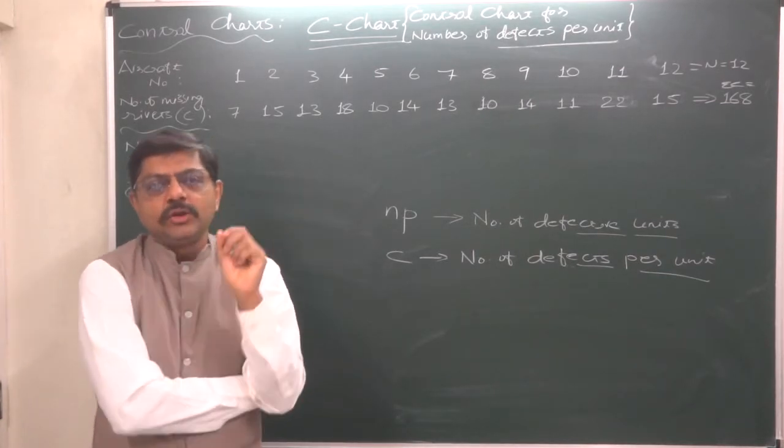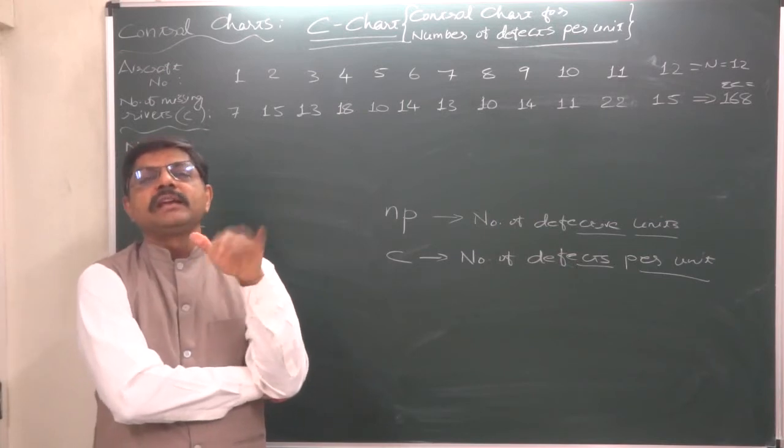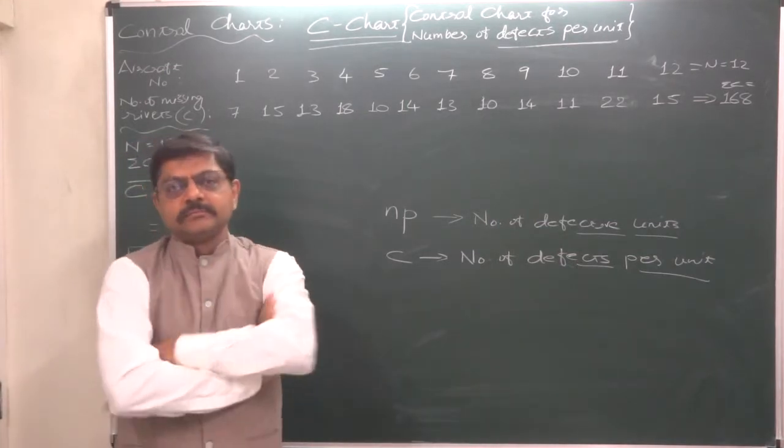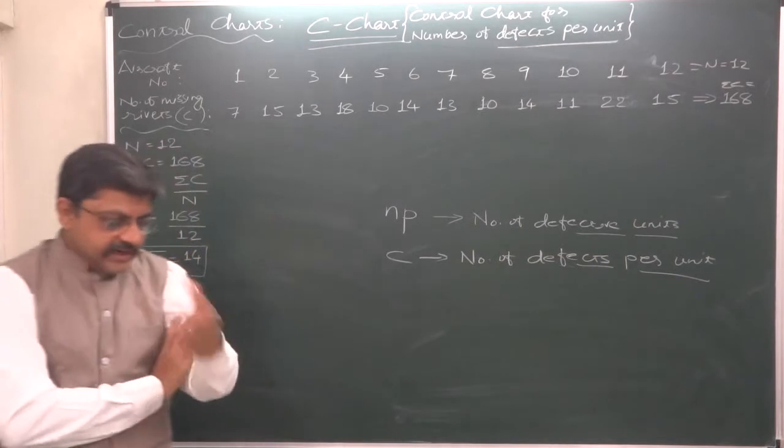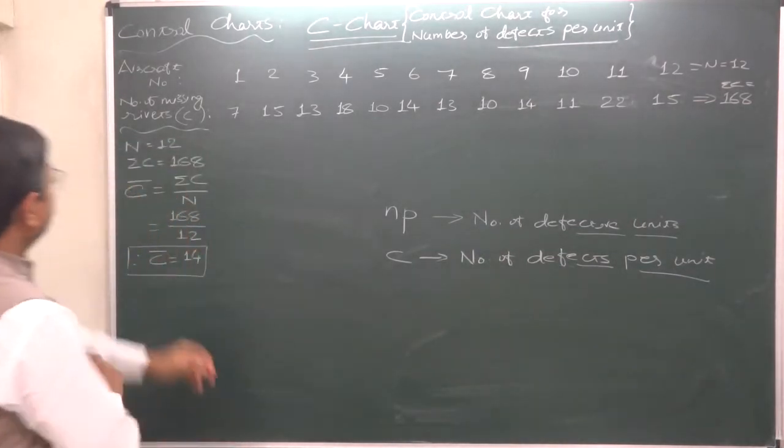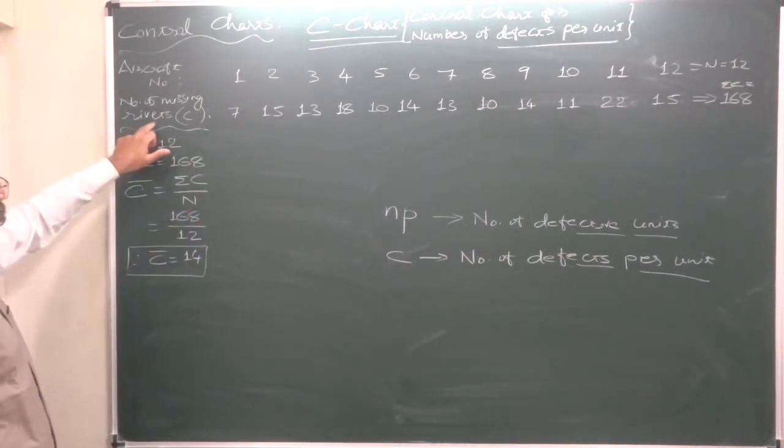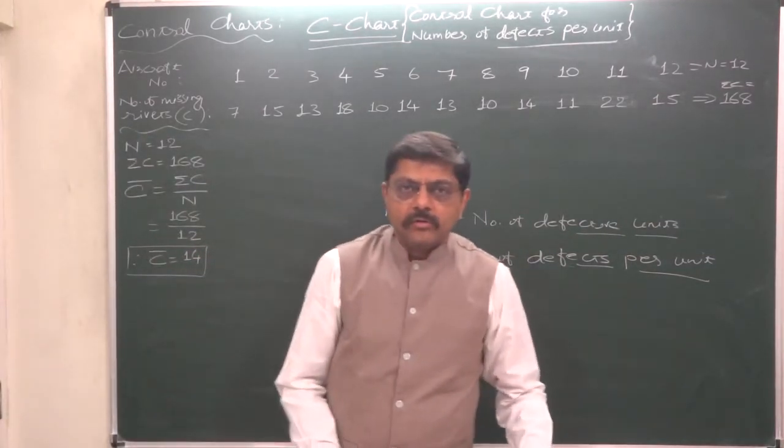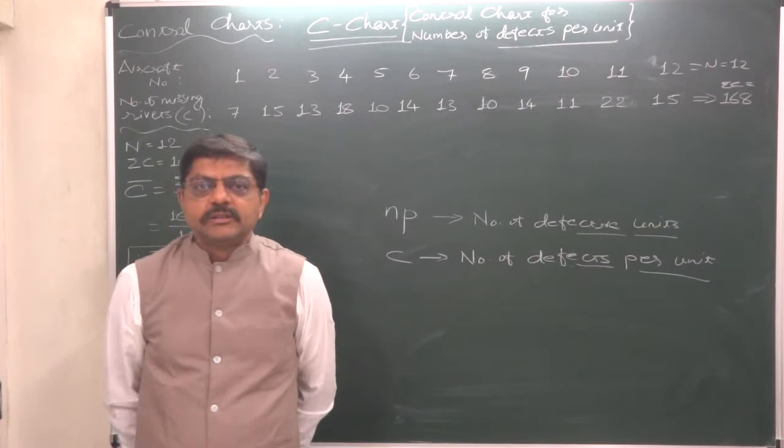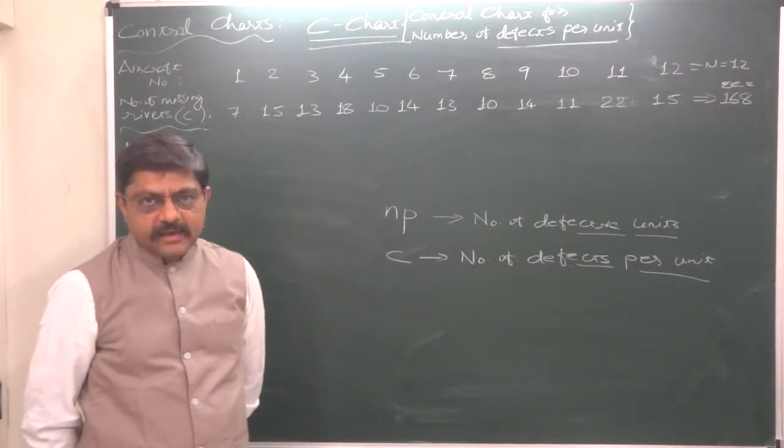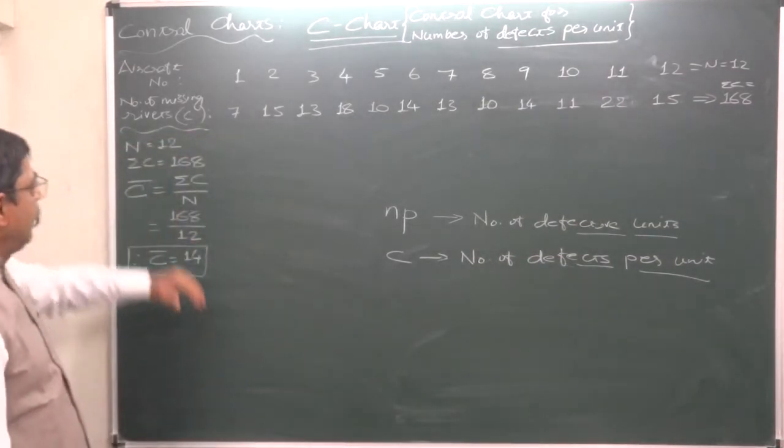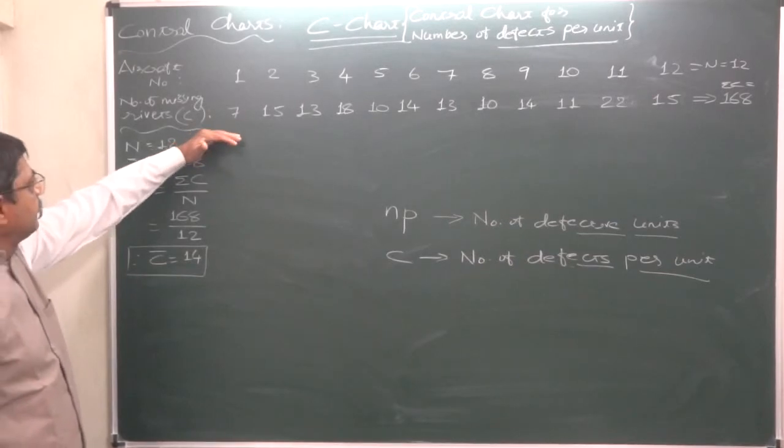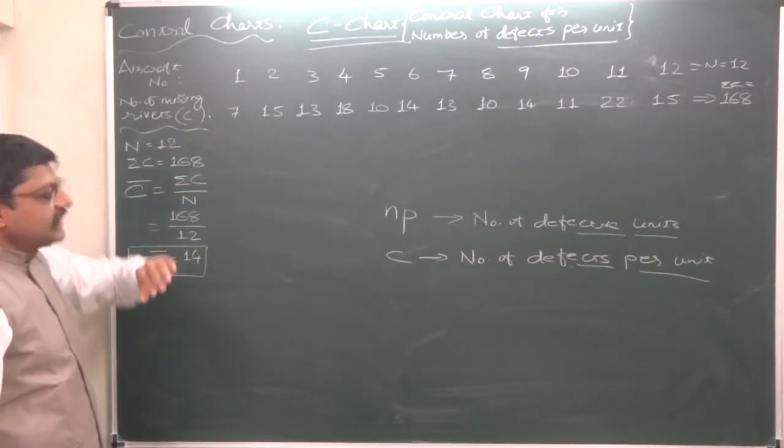Take an example here: number of missing rivets. Before taking off, every time the aircrafts are inspected for various kinds of errors, and here we have defined the error in the form of missing rivets.